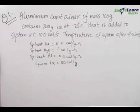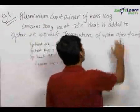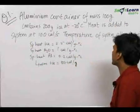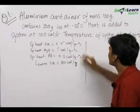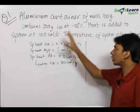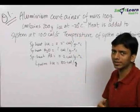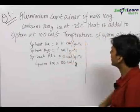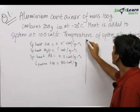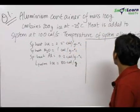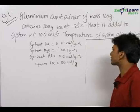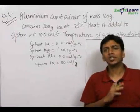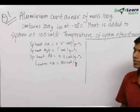In this question, there is an aluminium container of mass 100 grams and it contains 200 grams of ice at minus 20 degree Celsius. The system is at thermal equilibrium, which means the aluminium container is also at minus 20 degree Celsius. Heat is added to the system at 100 calories per second. We need to find out the temperature of the system after 4 minutes.